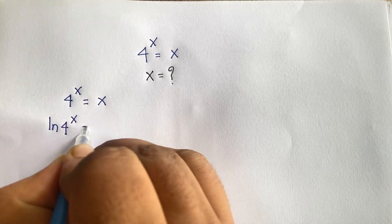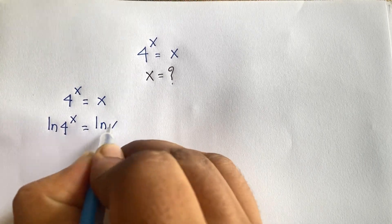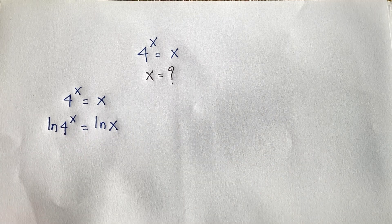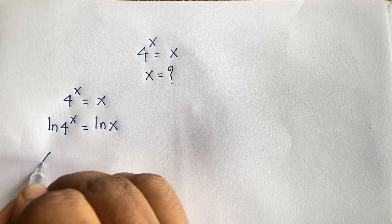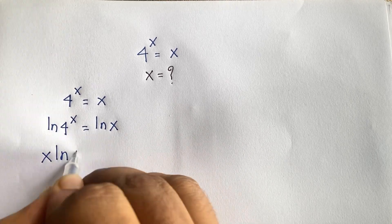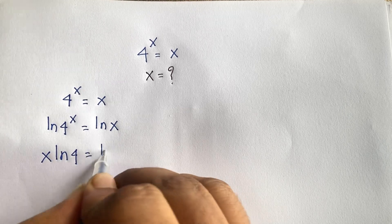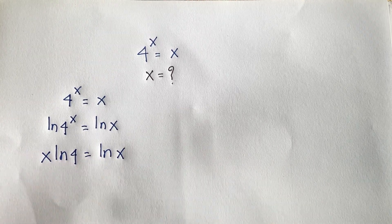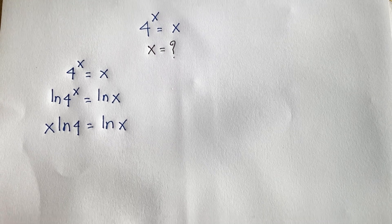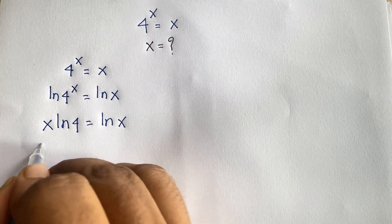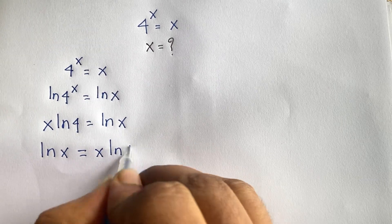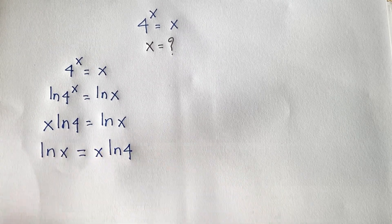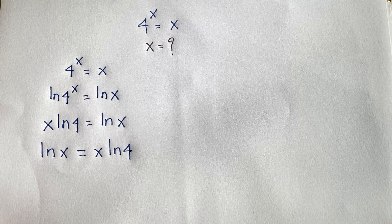I just apply ln on both sides. Now at this moment, according to ln rules, this x moves to the front, so it will be x·ln 4 is equal to ln x. This equation becomes: ln x is equal to x·ln 4, I just swap the places.